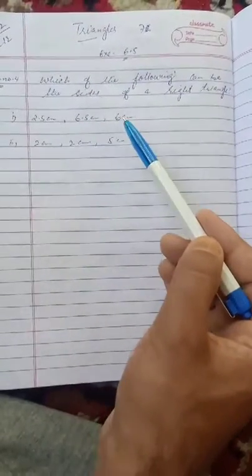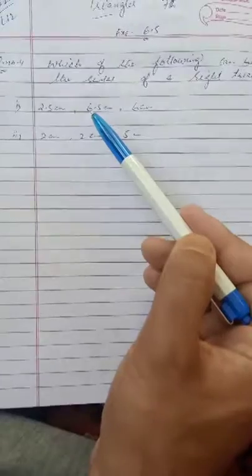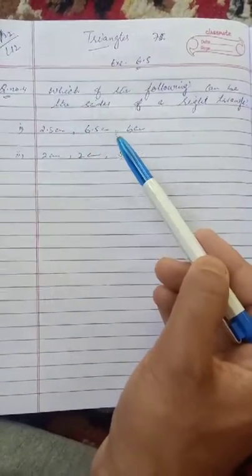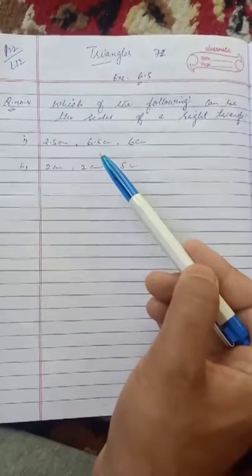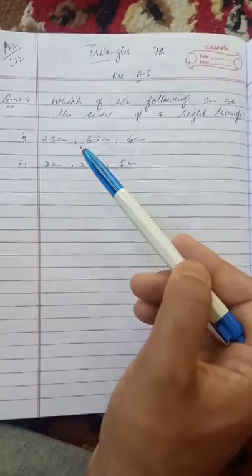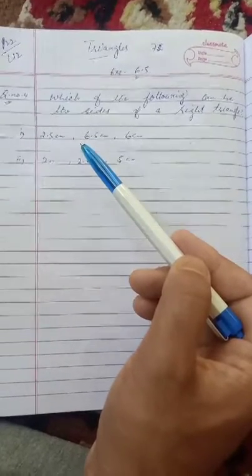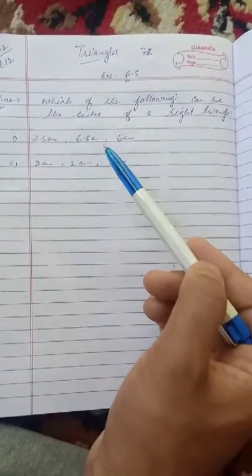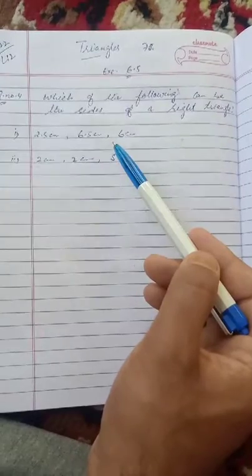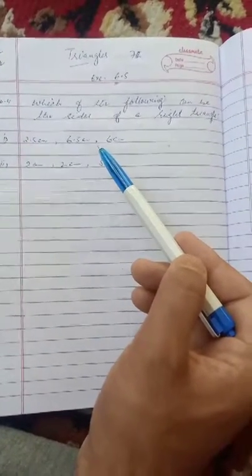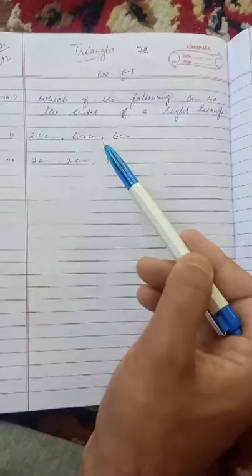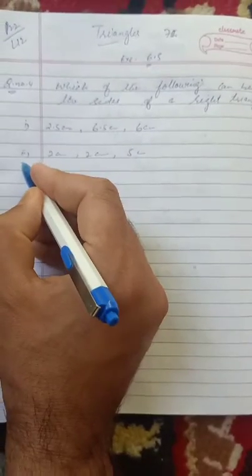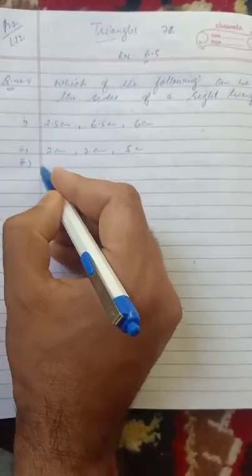We need to determine which sides can be the sides of a right angle triangle. We will use the Pythagorean theorem. If hypotenuse square equals base square plus perpendicular square, then it follows the Pythagorean theorem and these are sides of the right angle triangle.